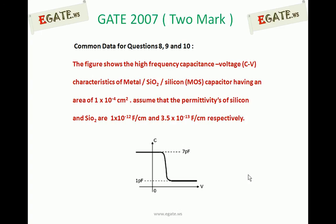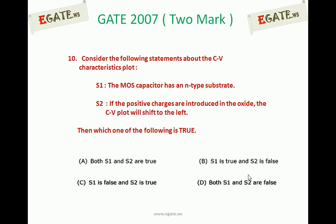Next question: for the same data and diagram of high frequency CV characteristics of a MOS capacitor, consider the following statements. Statement 1: the MOS capacitor has an N-type substrate. Statement 2: if positive charges are introduced in the oxide, the CV plot will shift to the left. Which is true? A. Both S1 and S2 are true. B. S1 true, S2 false. C. S1 false, S2 true. D. Both S1 and S2 are false.